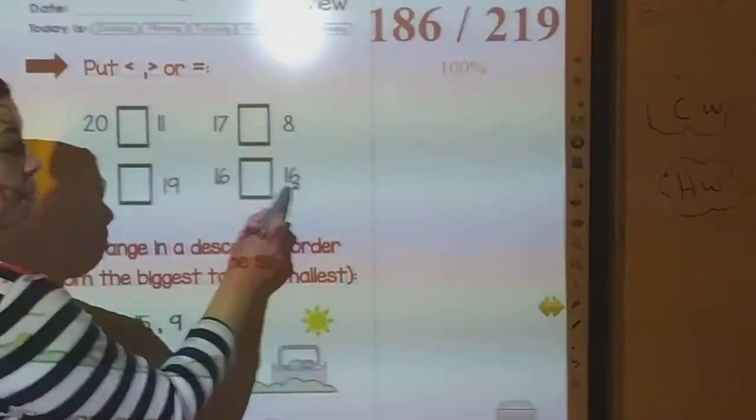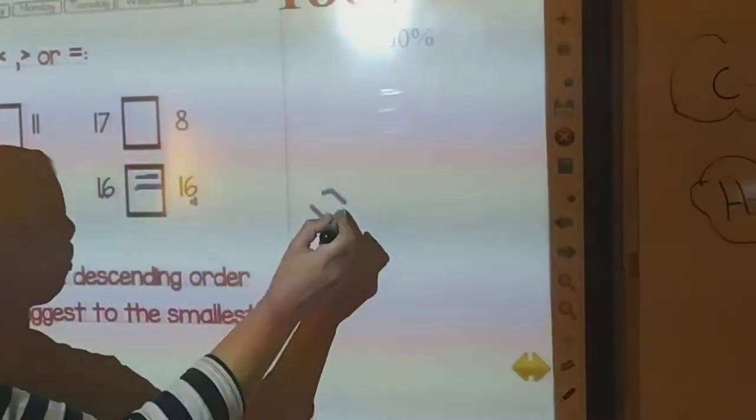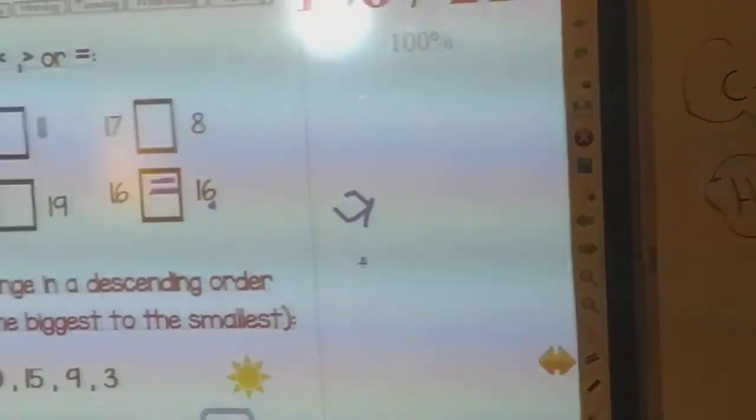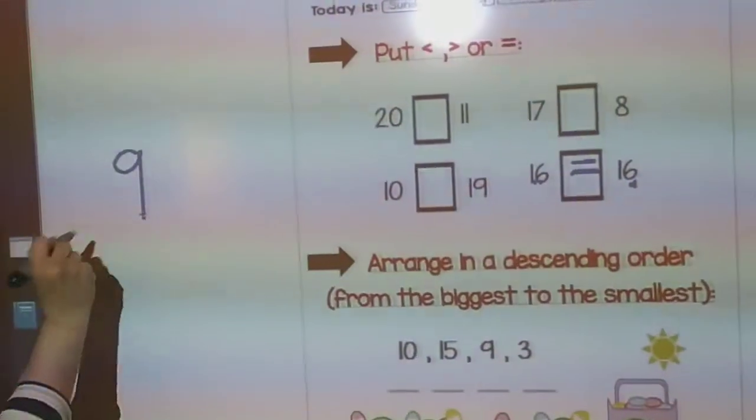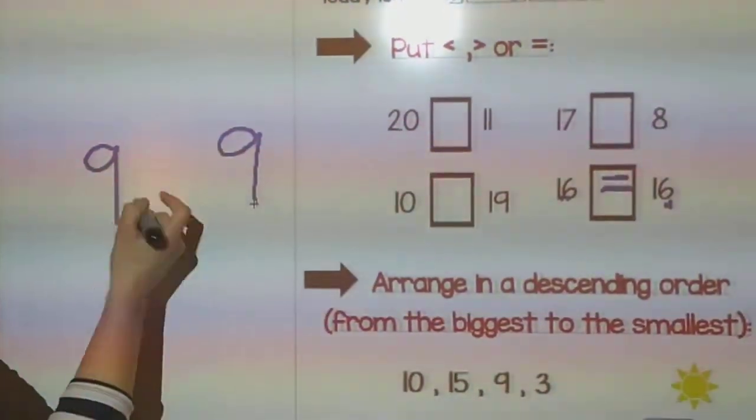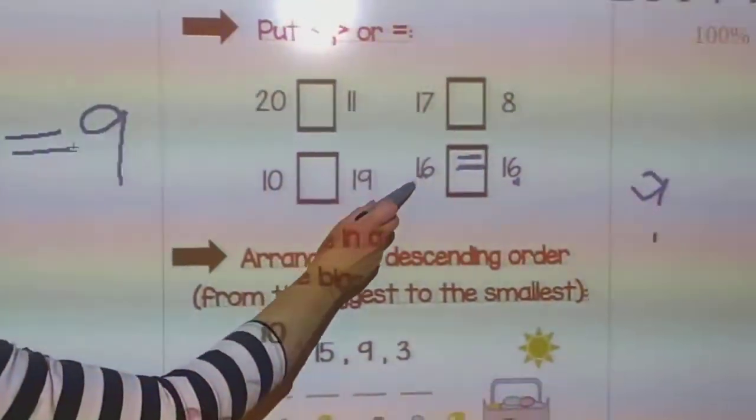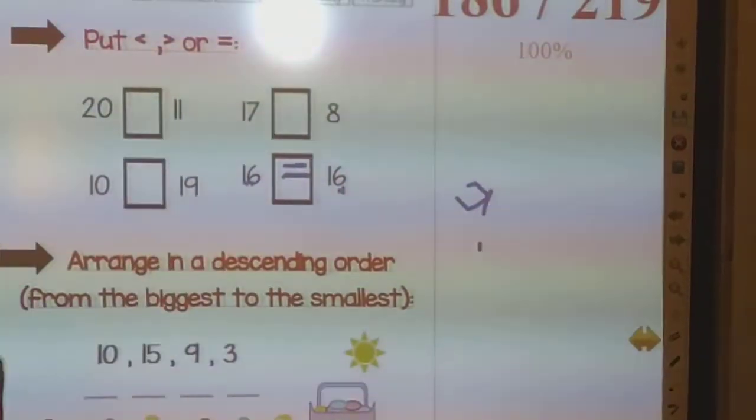If I have two same numbers, it means equal. If I have nine and nine, I have two same numbers, it will be equal. So sixteen and sixteen, it will be equal.